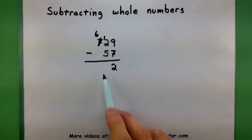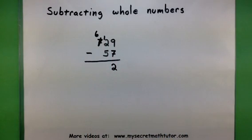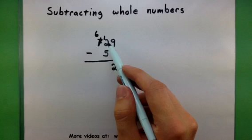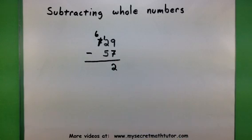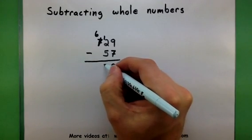So I'm going to reduce the 7 to 6 and give that 1 to the 2. Now when I look at this column, it looks like 12 minus 5. Perfect. Now my top number is larger than the bottom one. So 12 minus 5 gives us a 7.